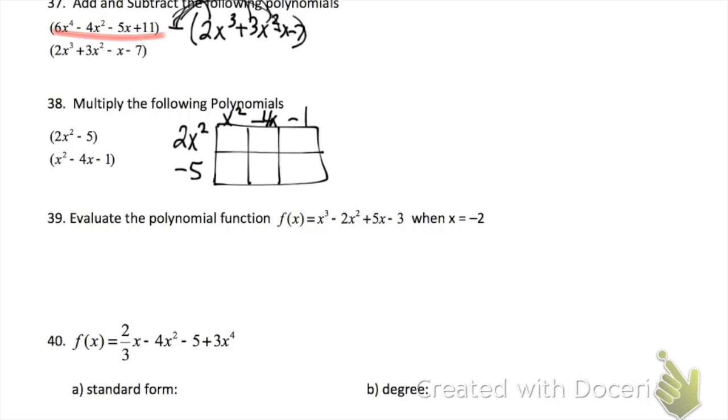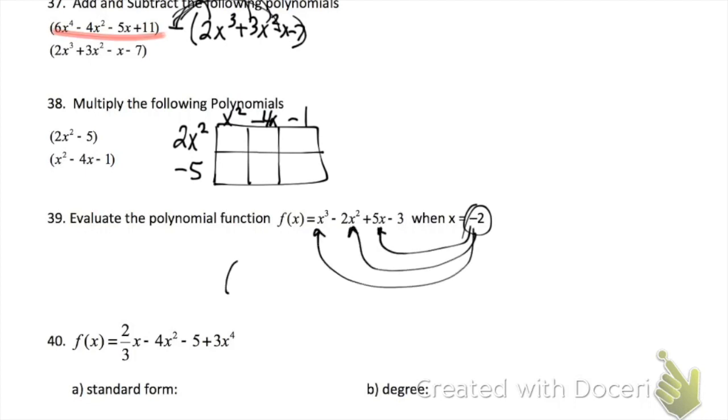Problem 39 says to evaluate — take negative 2 and plug it in for every X that you see. Make sure that you put it in parentheses.